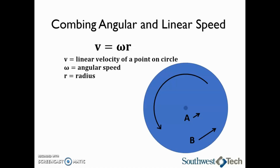It is also worth mentioning that in this picture, the linear speed of point A, as indicated by the small straight arrow by point A, will be much less than the linear speed of point B, which is indicated by the longer straight arrow by point B, because the radius at A is much smaller than the radius at B. However, both points will have the same angular velocity, as indicated by the curved arrow.